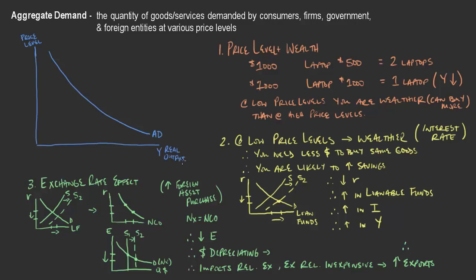We know that real output Y equals C plus I plus G plus net exports (exports minus imports). If exports are increasing, this increases real output. So as price levels decrease, that flows all the way through to increases in real output. At high price levels, imports outweigh exports and real output decreases; at low price levels, exports are highlighted and real output grows.